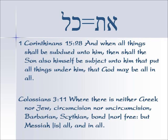Kol means everything, all-in-all. We see scriptures that point to this in 1 Corinthians 15:28: 'And when all things shall be subdued unto him, then shall the Son also himself be subject unto him that put all things under him, that God may be all in all' — the aleph-tav is kol, it's everything. Colossians 3:11: 'Where there is neither Greek nor Jew, circumcision nor uncircumcision, barbarian, Scythian, bond nor free, but Messiah' — the aleph-tav is all and in all, kol.